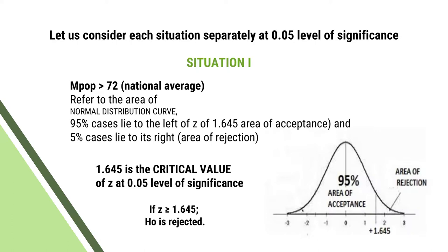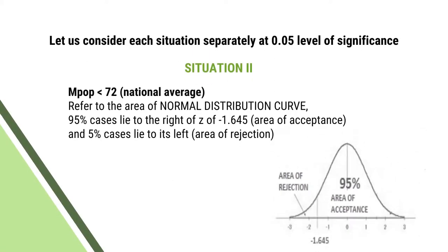5% of cases lie to its right — that is the area of rejection. 1.645 is the critical value of Z at 0.05 level of significance for a one-tailed test. Note that at 0.05 level, the critical value for a two-tailed test is 1.96, but since this is a one-tailed test, the critical value is 1.645. If the calculated Z is greater than or equal to 1.645, the null hypothesis is rejected.